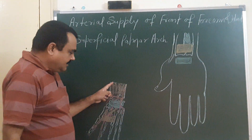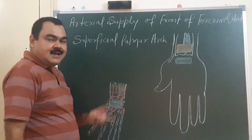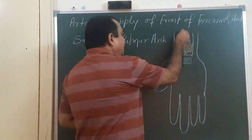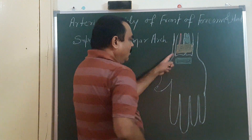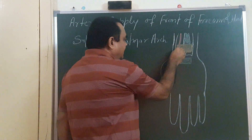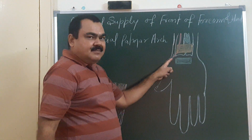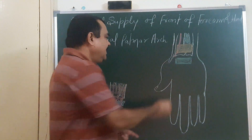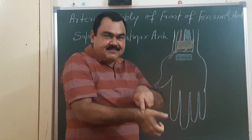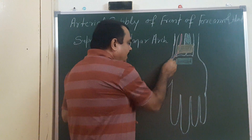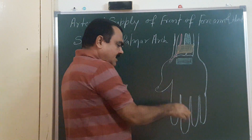Here you can see this is the radial artery and this is its course. And this is the ulnar artery and this is its course. The radial artery at the lower end of radius turns toward the lateral side. It passes deep to abductor pollicis longus and extensor pollicis brevis. It goes into the anatomical snuff box here, and then passes deep to extensor pollicis longus, reaching into the posterior side.